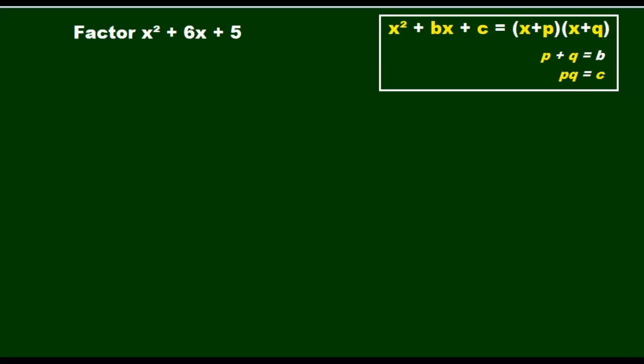So what does that mean? When we have a trinomial that has a leading coefficient of 1, nothing is written in front of our x squared, there's actually an unwritten 1 there, we can start by writing it as double parentheses, and we can put our x in each one, because when we do our FOIL, we do x times x, and that gives me x squared.